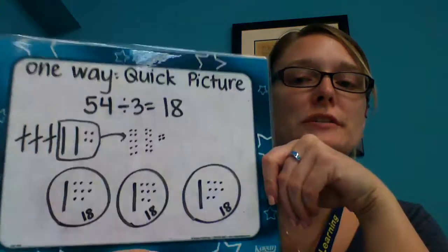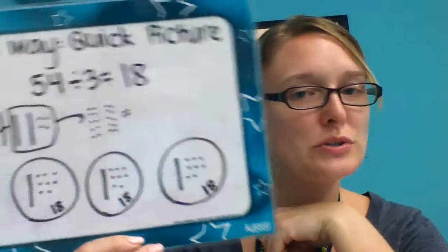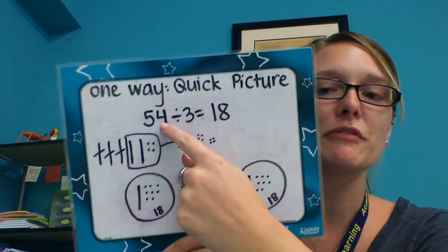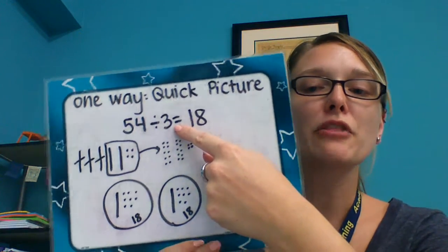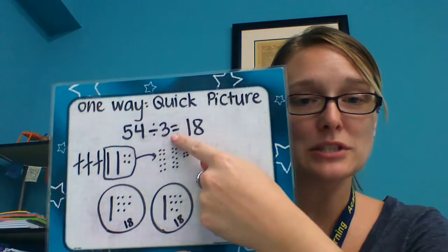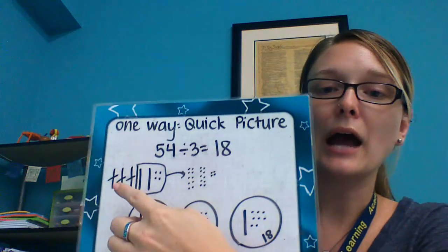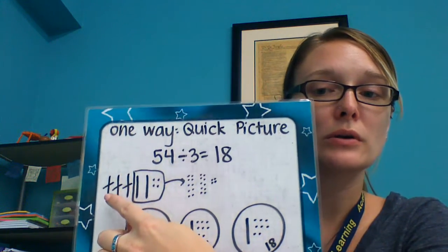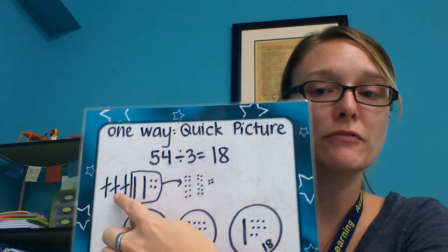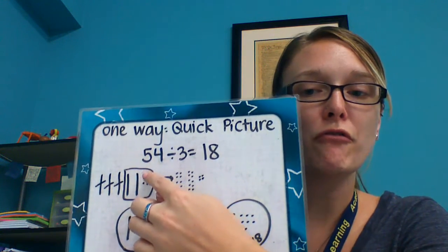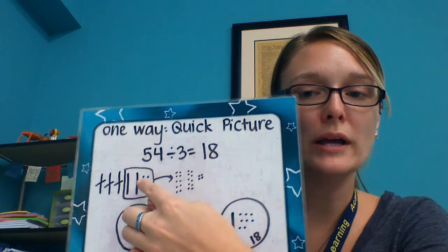One way you can solve it is by doing quick pictures — but you didn't know you could use that for division. If I had the problem 54 divided by 3, the first thing I would do — step one — I would draw 50 with my sticks and four ones.